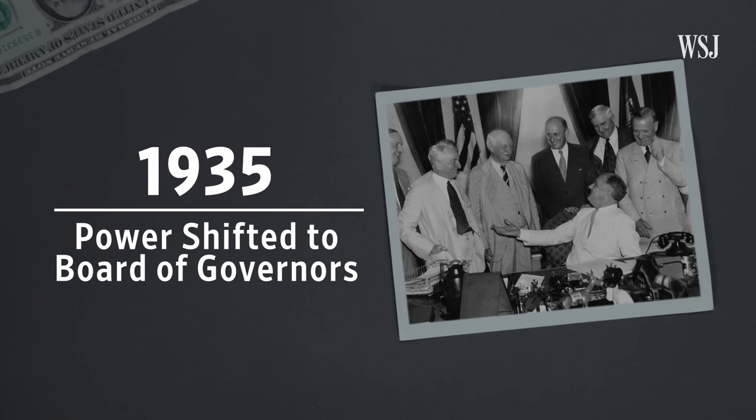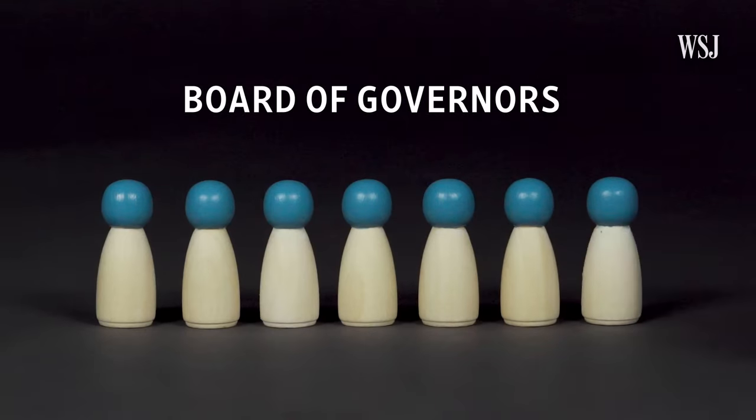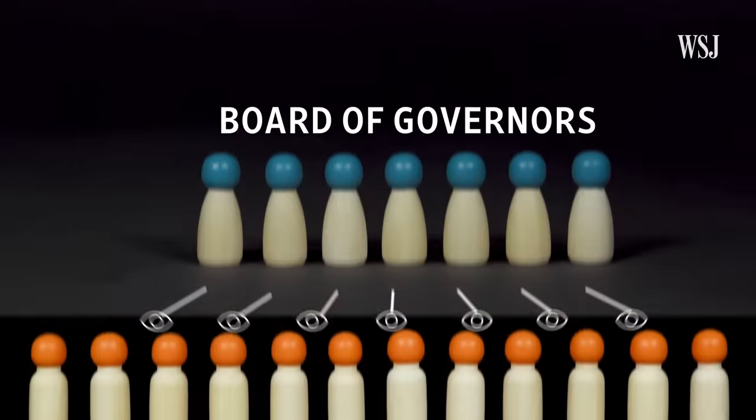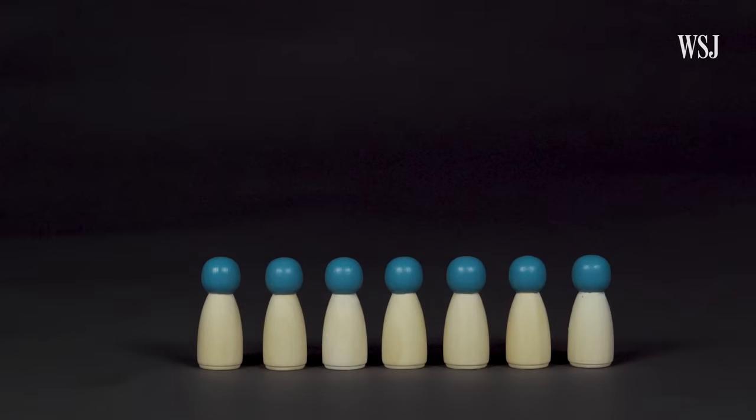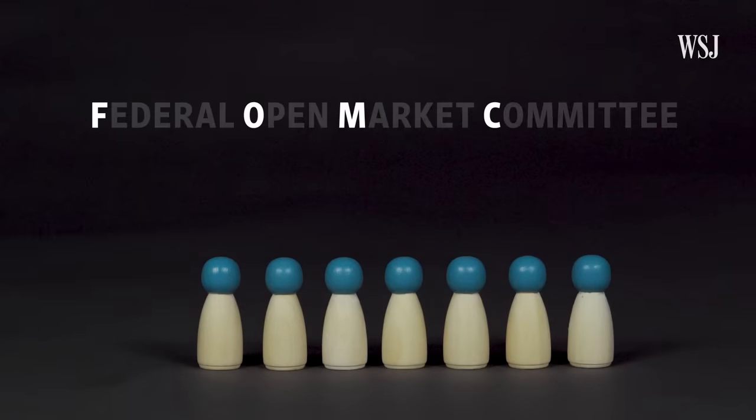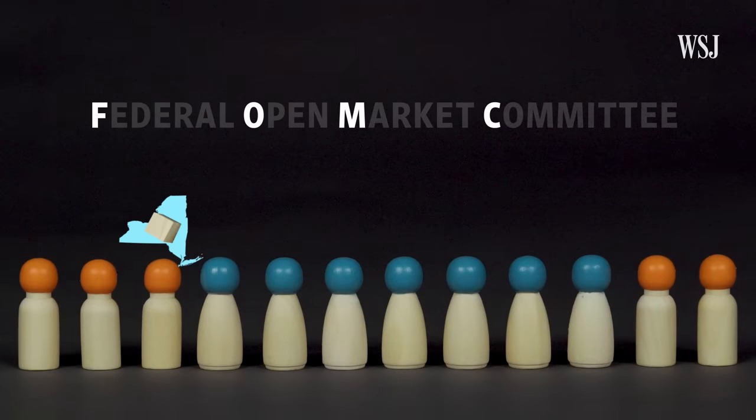So in 1935, Congress put the Washington-based Board of Governors in charge. It would be a group of seven people from different parts of the country, including a chairman, each nominated by the president and confirmed by the Senate, just like a Supreme Court justice. They oversee the Federal Reserve System and also serve on the Federal Open Market Committee — the FOMC — which also includes five bank presidents, one from New York and four that rotate. This is the group of people who get together and decide things like interest rates. When you talk about a Fed meeting, you're talking about a meeting of the FOMC.